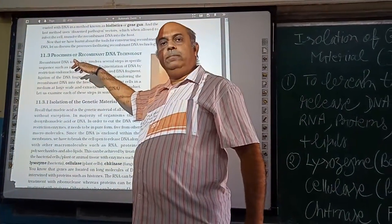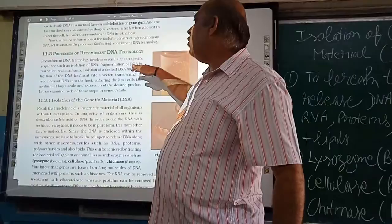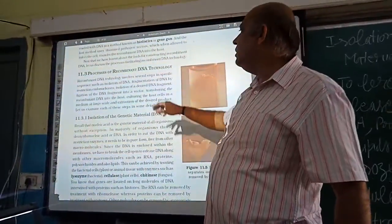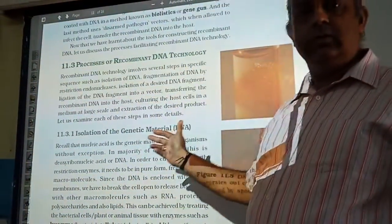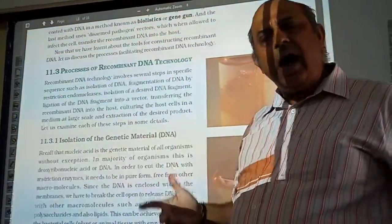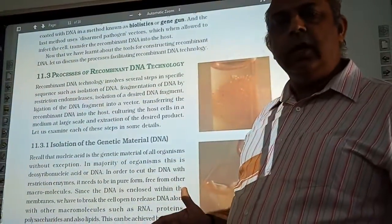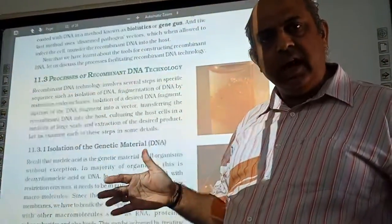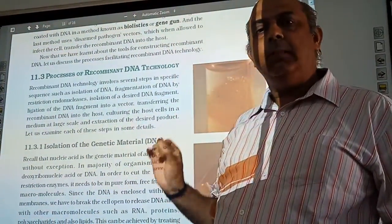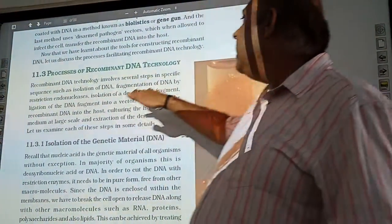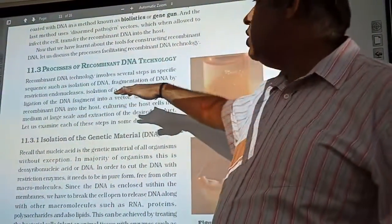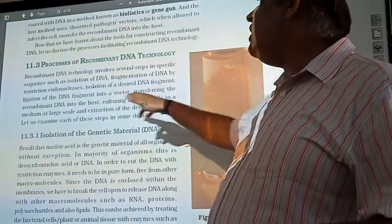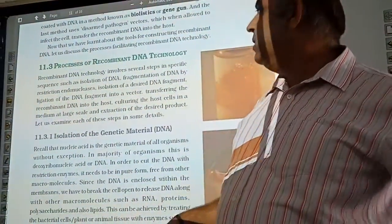Isolation of DNA. Fragmentation of DNA by restriction endonucleases, that we have already seen. Isolation of a desired DNA fragment, that we have also seen in one of my previous lectures, in which we first do agarose electrophoresis and then we remove the desired DNA segment by elution. The next step is ligation of DNA fragment into a vector, that you will already know. Transferring the recombinant DNA into the host, that was my previous topic.